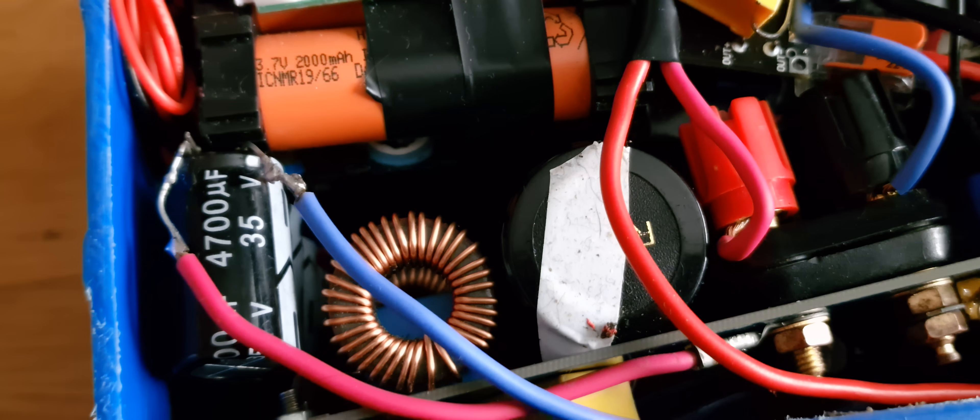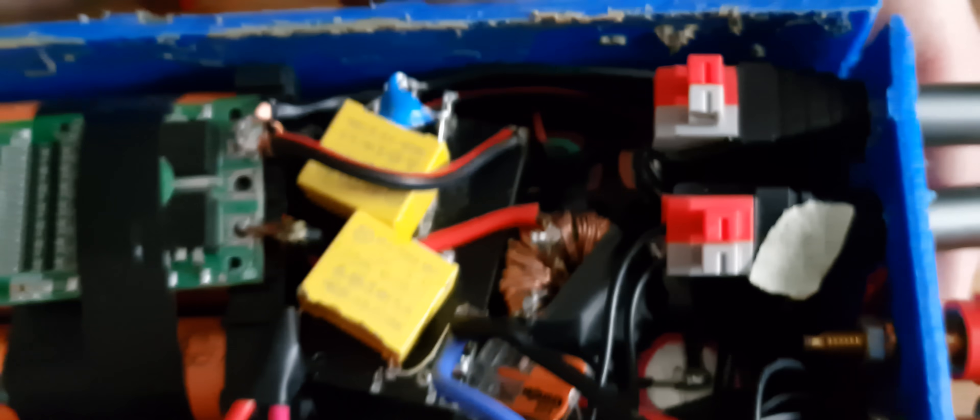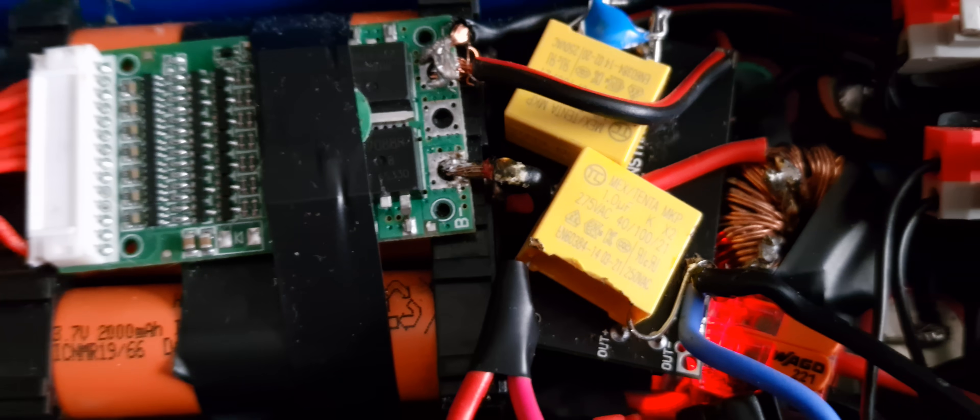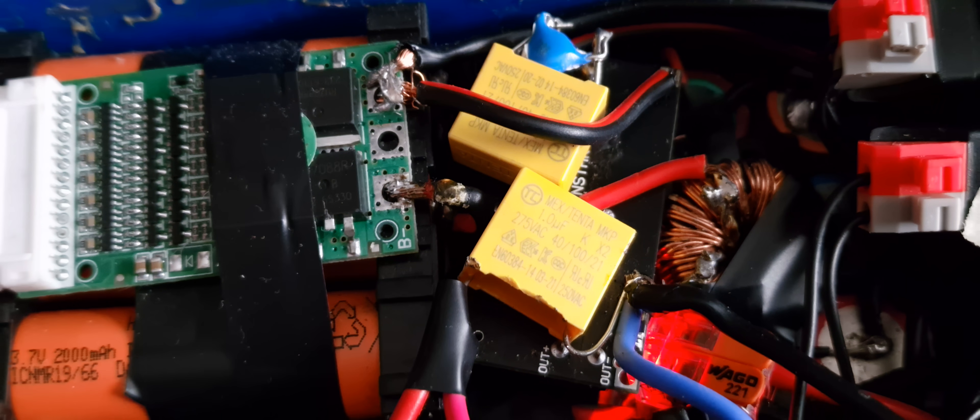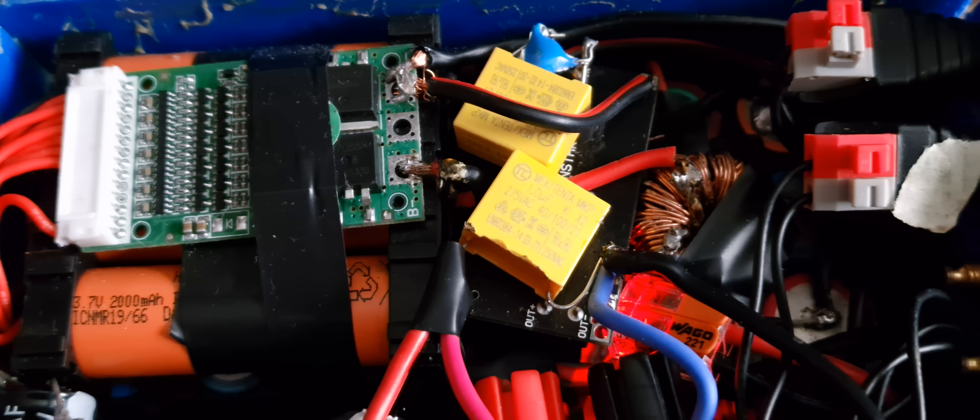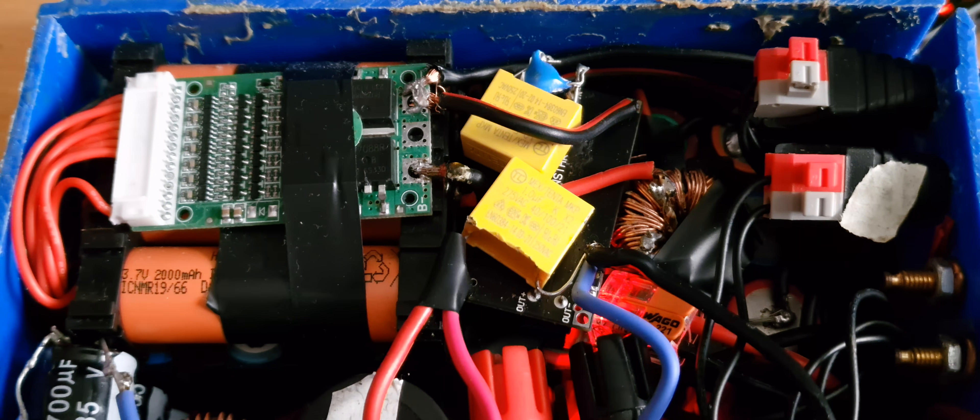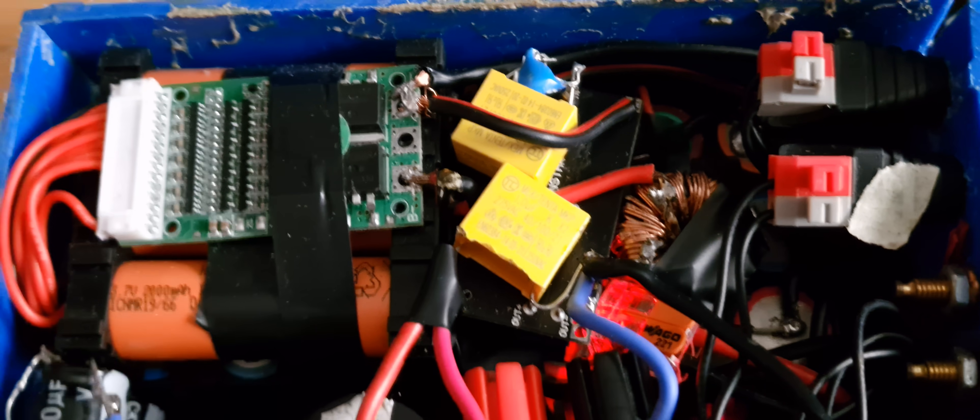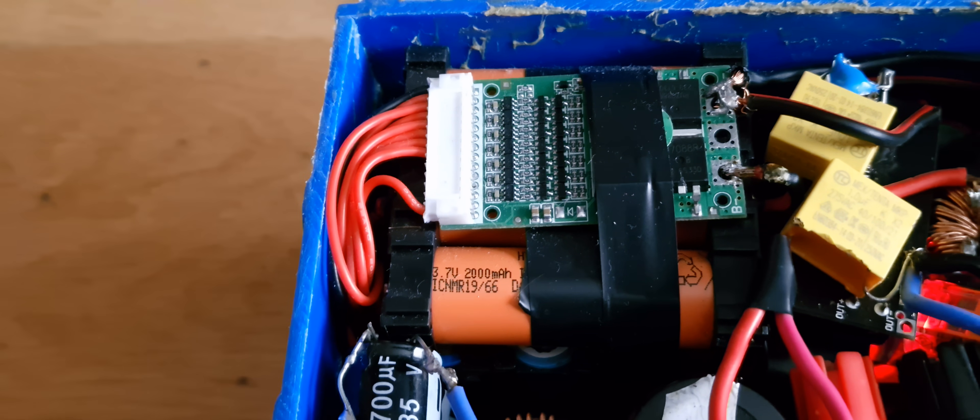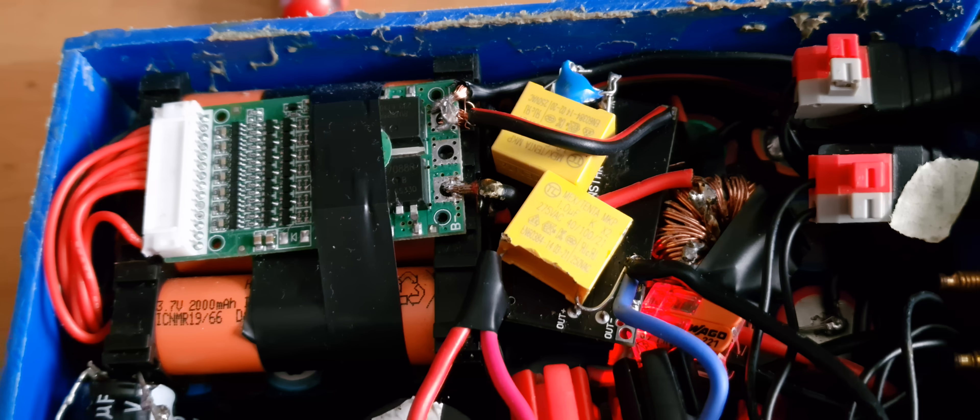But I fixed this problem by adding caps here, here and here. So I'll show you how it works. Here I have a button just to make it work. Okay, board is working. And this here, this small board, it's a cheap buck converter. I put 28.5 volts here because battery voltage is always dropping, it's discharging. Here it's always 28.5 volts.